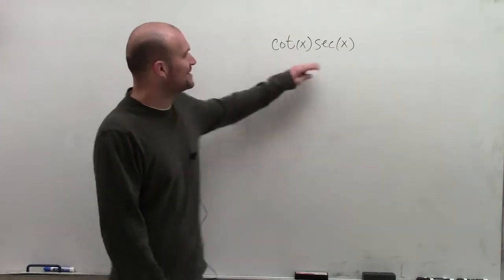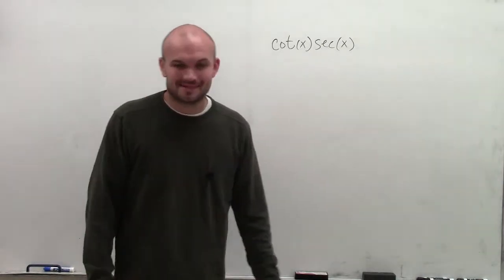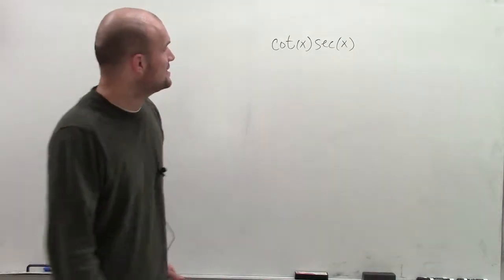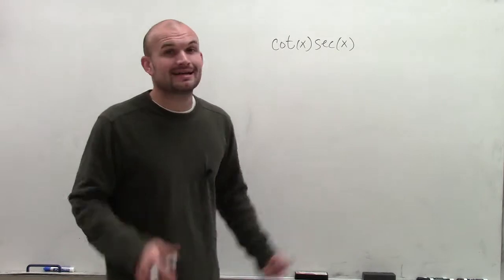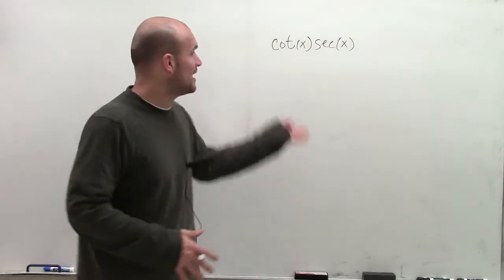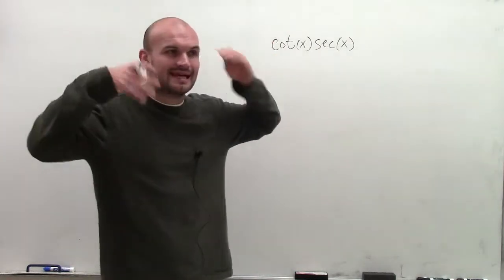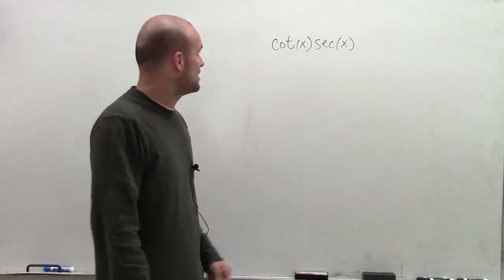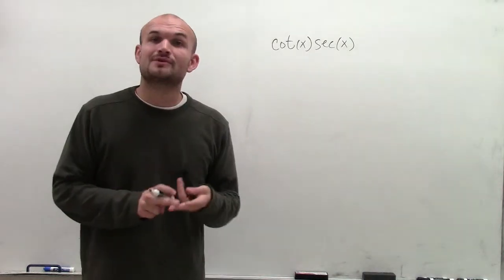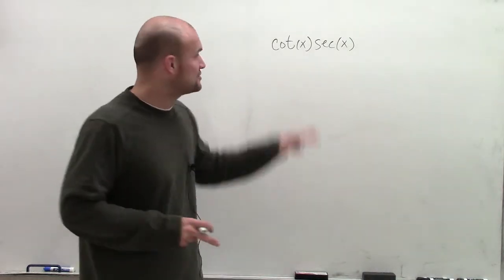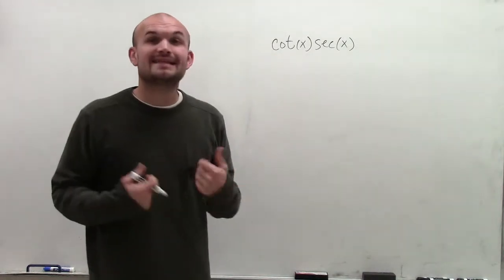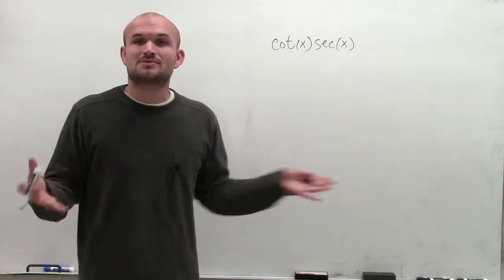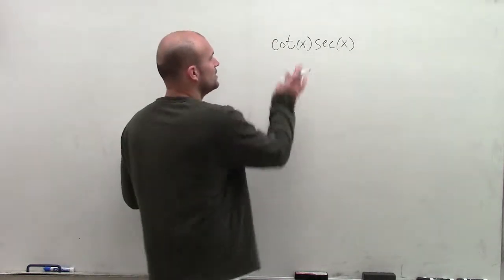Welcome. What I want to do is show you how to simplify this using our trigonometric identities. There are going to be two identities that I'll work with. Right now, I don't see anything initially that I can do to simplify this problem. However, I can use the quotient and the reciprocal identities to rewrite the cotangent of x and the secant of x, and then we'll see if we can simplify it further from there.